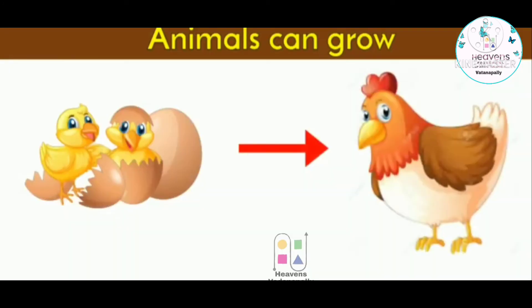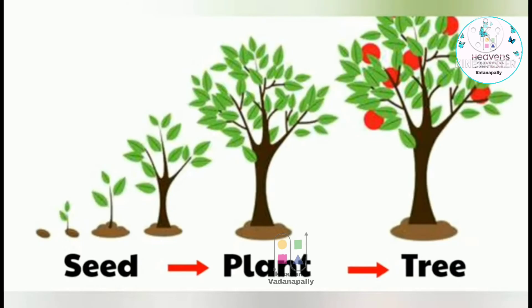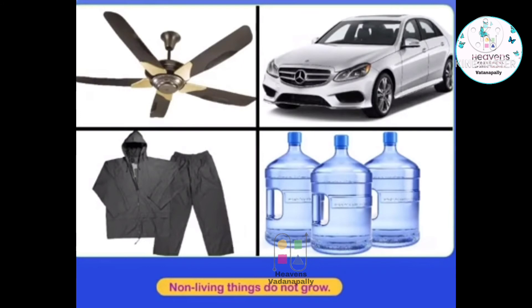Puppies grow into dogs, chicks grow into hens. And butterflies, they come from caterpillars. A seed will grow into a big tree. But non-living things do not grow.